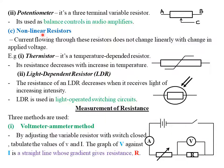The third and last type of resistor is what we call a nonlinear resistor. As the word suggests, nonlinear simply means that their resistance is not directly proportional to current — it is not linear or in a straight line. In nonlinear resistors, the current flowing through these resistors does not change linearly with change in applied voltage. So if you plot a graph of voltage against current for a nonlinear resistor, you will not obtain a straight line graph — maybe a curve, but not a straight line.